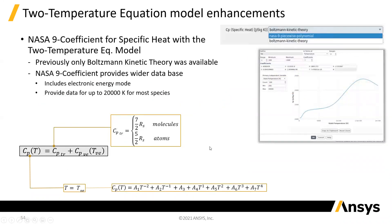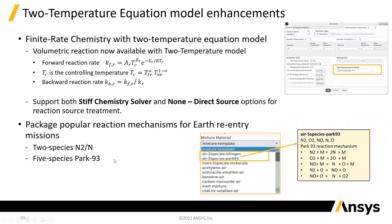The two-temperature equation model has undergone lots of enhancements. Firstly, you can bring in nine-coefficient specific heat formulations — a fairly generic approach that allows you to bring in the data you need for heat capacity. There's also been improvements with the chemistry; you can now have finite rate chemistry with the two-temperature model. There are also some packaged reaction sets available, so you can just pick those directly when you switch the mixture model on and start your setup from there.